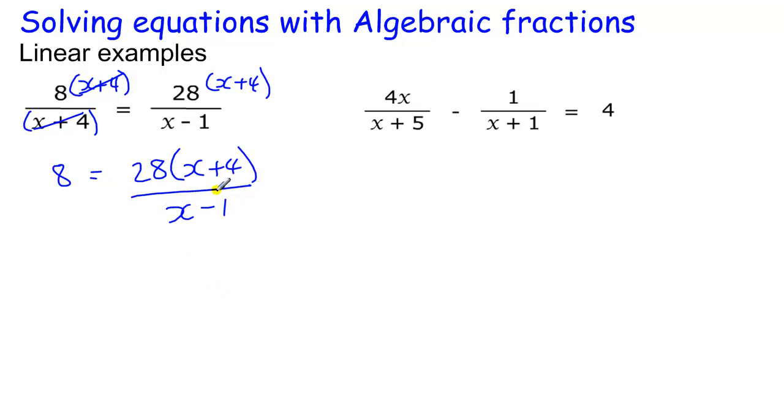Then I multiply by this fraction x minus 1, so I times this side by x minus 1, and I times this side by x minus 1, so that this bit and this bit cancels, to leave me with 8 lots of x minus 1 equals 28 lots of x plus 4.